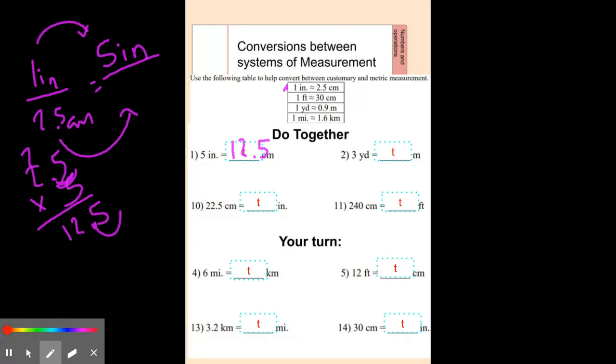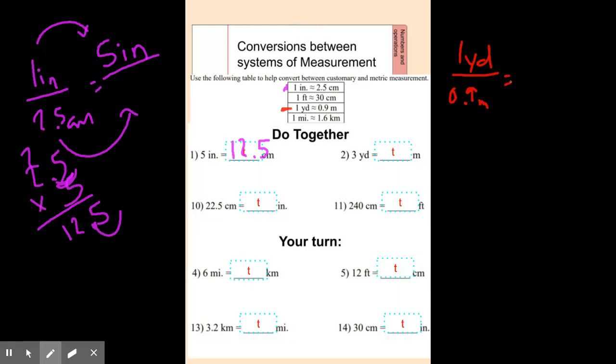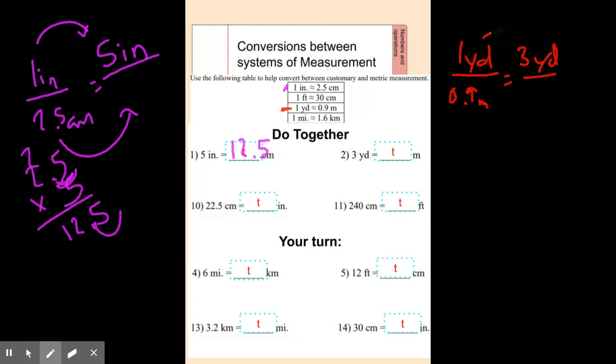The next question is three yards to how many meters? So we're going to look right here. It says that one yard is nine tenths of a meter. So 0.9 meters. We want three yards is how many meters. So 1 times 3 is 3. So we're going to do 0.9 times 3.